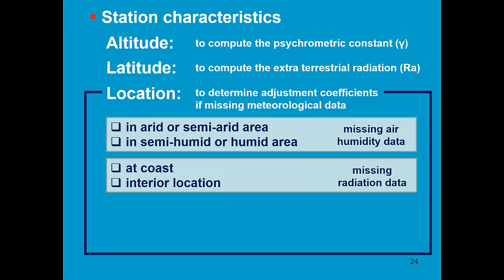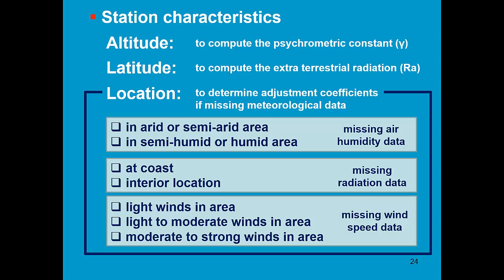Where is your station located — at the coast or in the interior? That determines the proportional coefficient KRS in the temperature-radiation method: is it 0.16 or 0.19? Finally, in case of missing wind speed, I need to know the general winds in that area: light winds — take 1 m/s; moderate to strong winds — take 4 m/s.